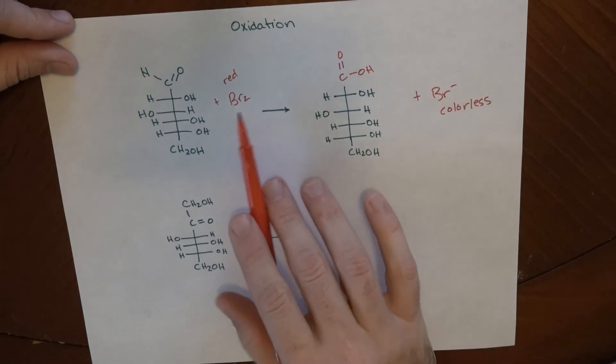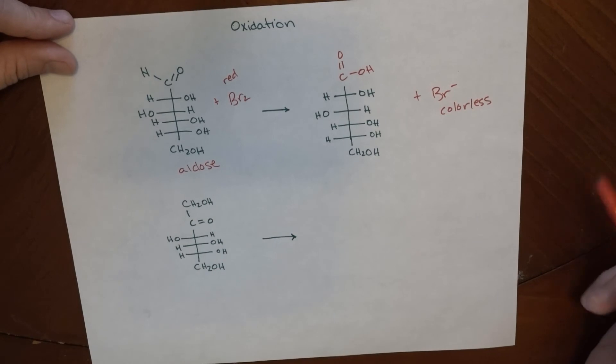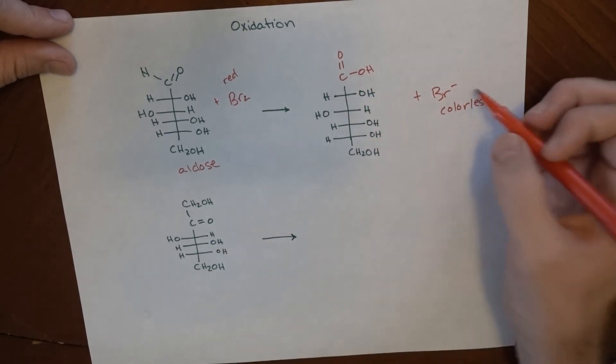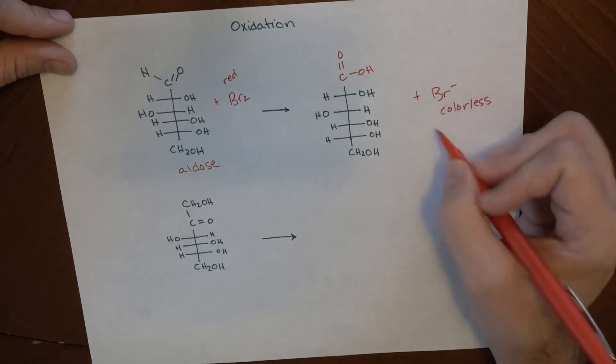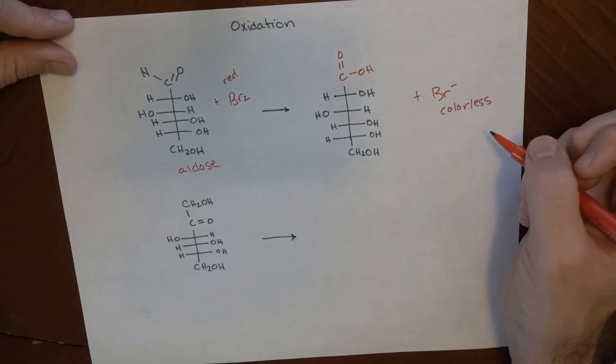So basically, if you have a test tube that goes from red to colorless when you put a sugar or an aldose, this one being specifically glucose, in solution with bromine, you end up with a carboxylic acid and you end up with something that is colorless. So through a color change, you can determine whether or not I have an aldose.